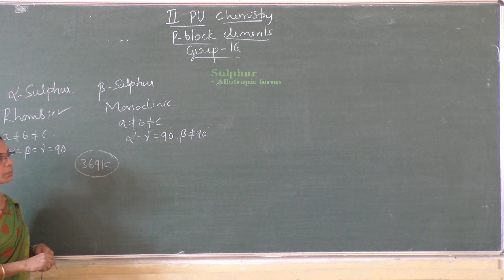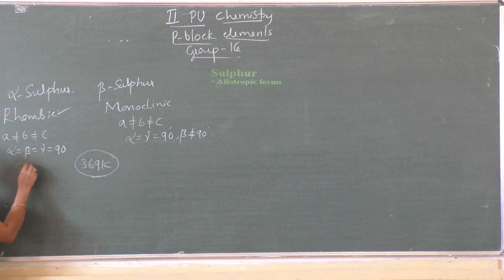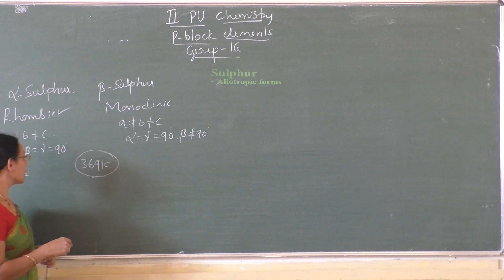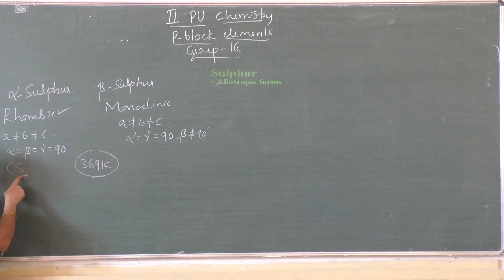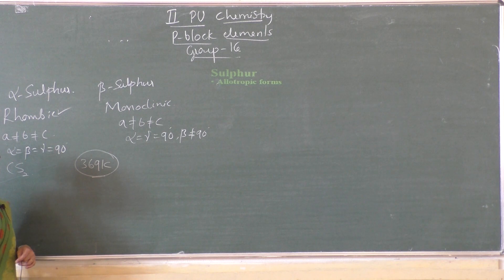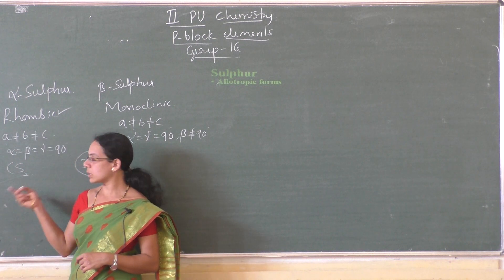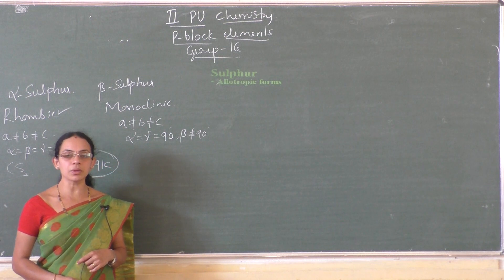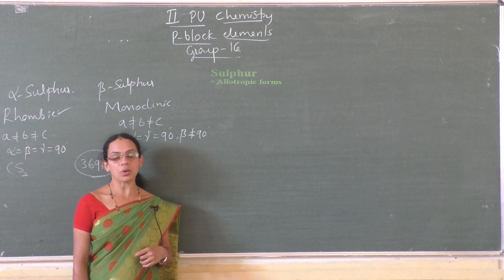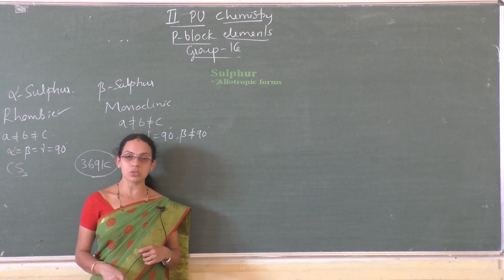Alpha sulfur is prepared by evaporating the solution of raw sulfur in carbon disulfide. It is readily soluble in carbon disulfide but insoluble in water, and soluble to some extent in alcohol, benzene and ether. It is stable at room temperature and above 369 K it is converted into beta sulfur.